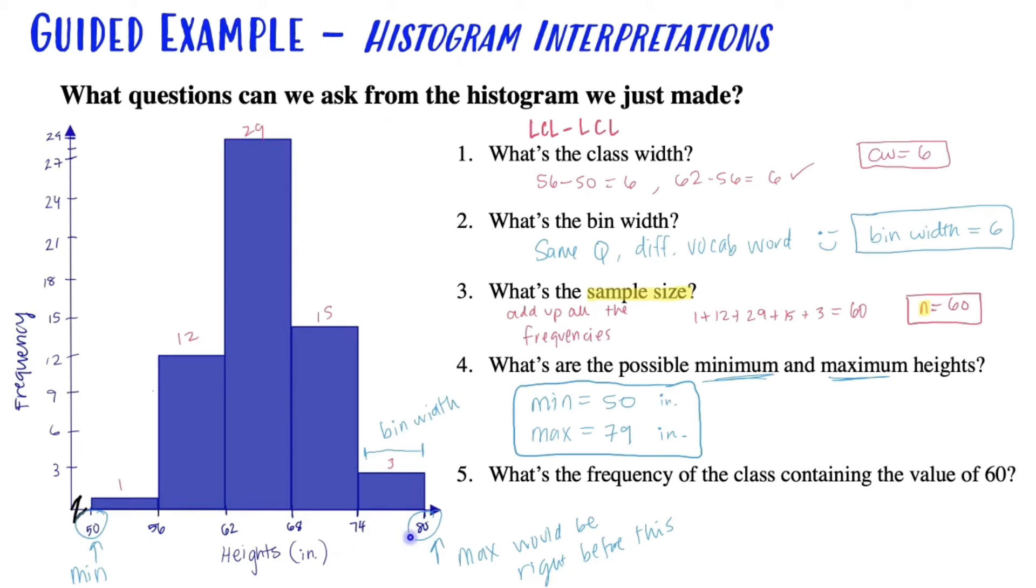So in the online homework software program, pay attention to how they described it. It could have been class boundaries or class midpoints. But hopefully they were all lower class limits. So that's your possible maximum and possible minimum. And we again abbreviate max and min for minimum and maximum.